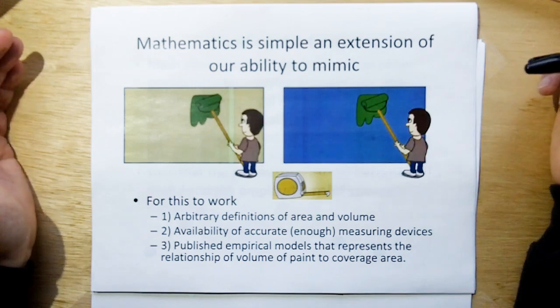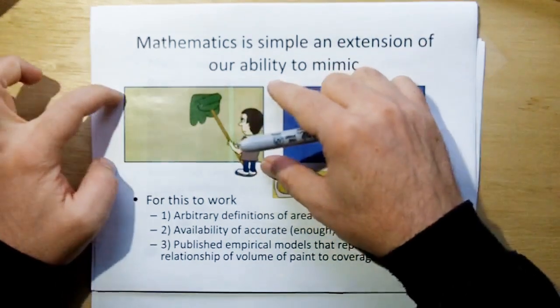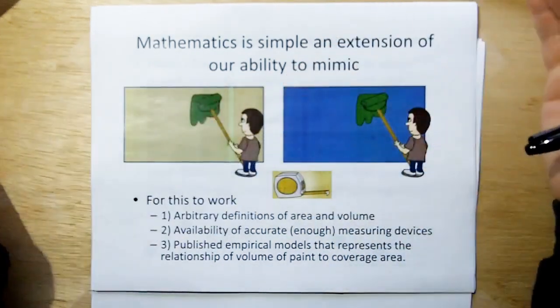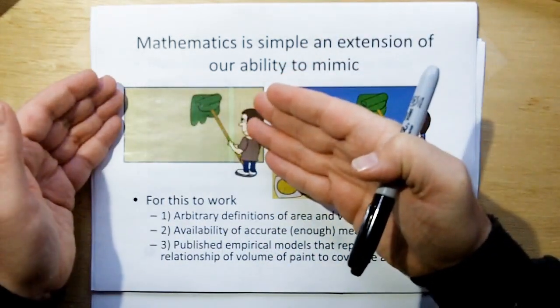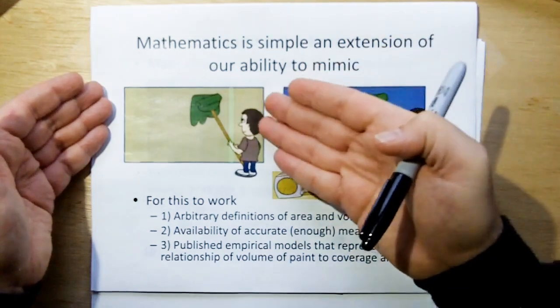So basically, mathematics is simply an extension of our ability to mimic. Because when you go and paint your wall, you're basically mimicking what some poor slob at the paint company did, but you're going to use mathematics to scale up or down your project based on his empirical measurement. So all we're doing is using mathematics to mimic what has already been done.